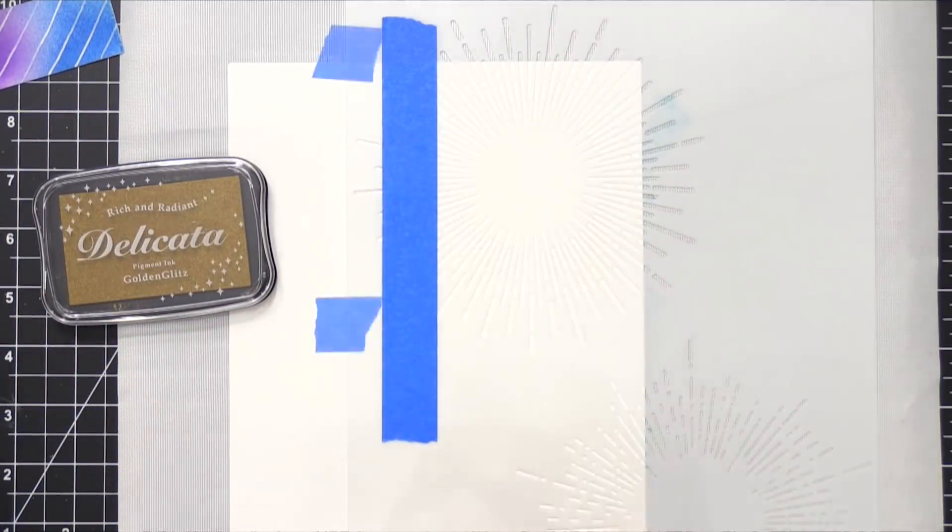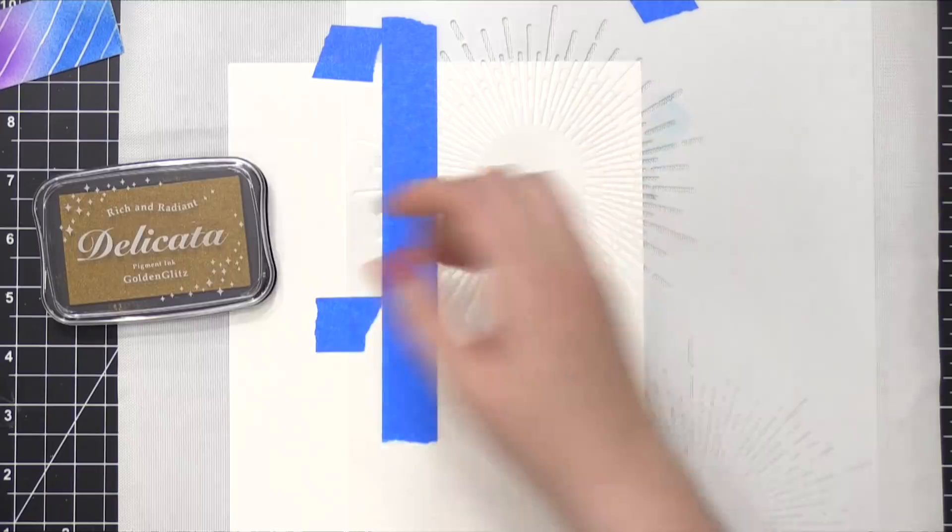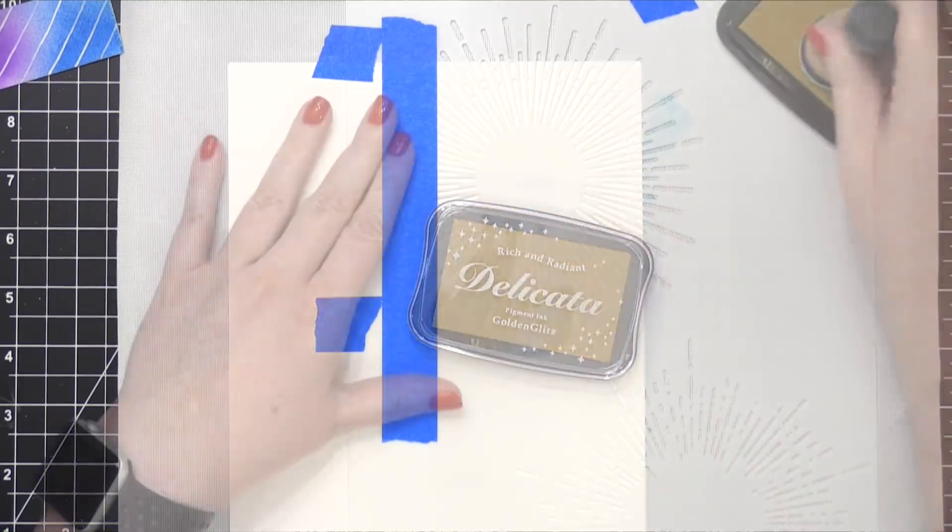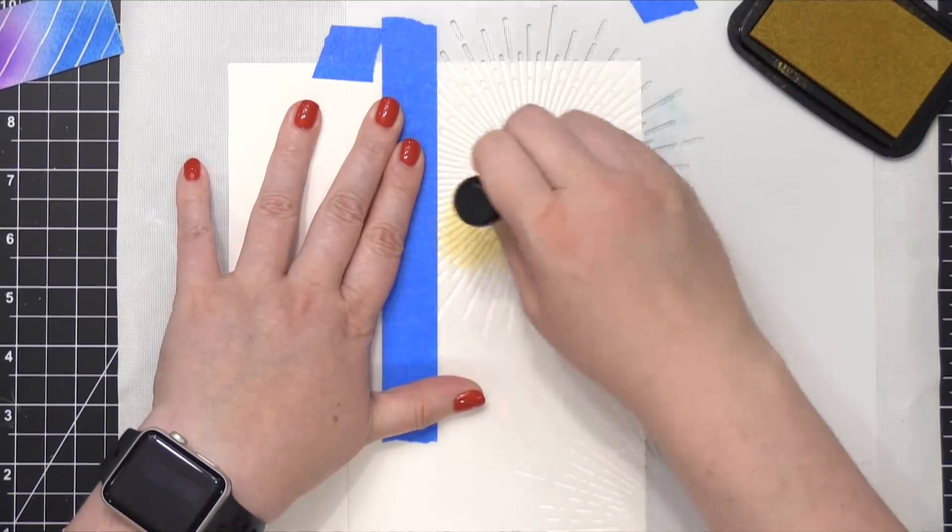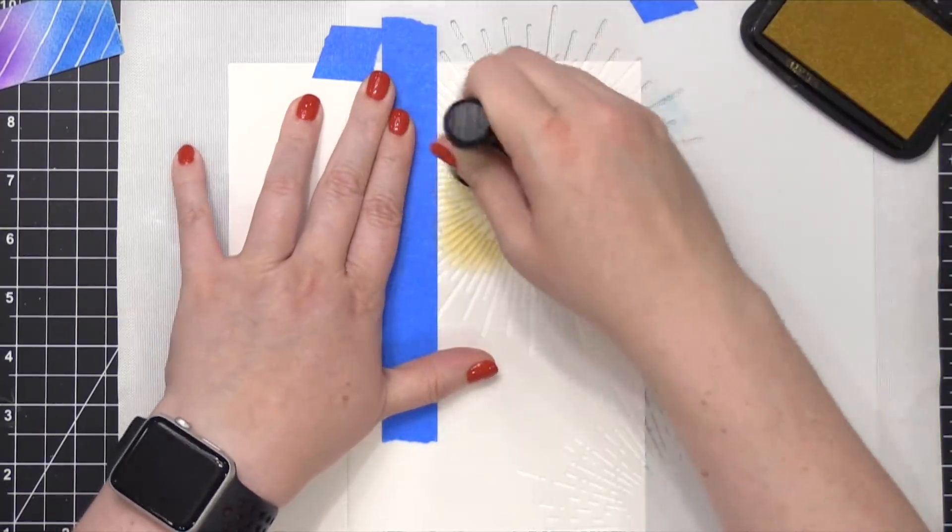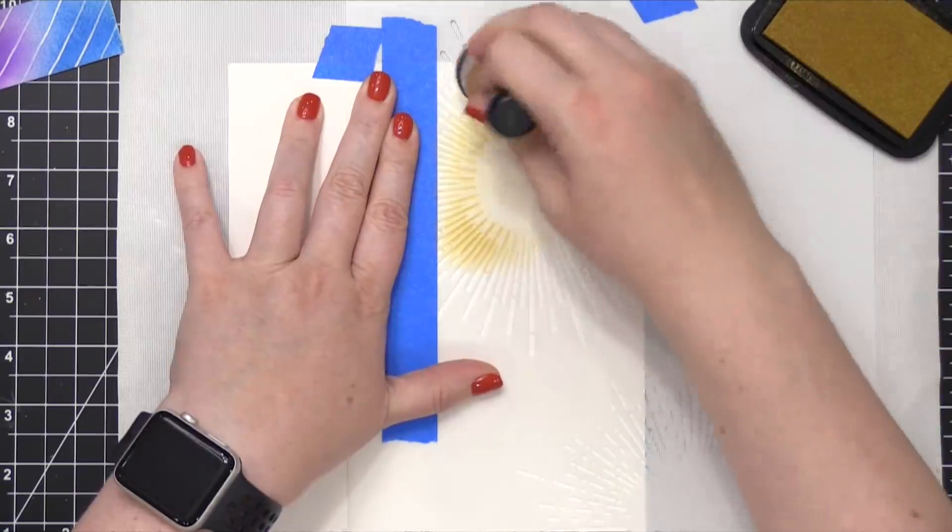And I'm using some Golden Glitz pigment ink. This is a Delicata ink from Tsukineko. And I'm using a mini round blending tool to add this on. I'm kind of using more of a stamping motion, up and down, trying to really press that ink into this stencil.